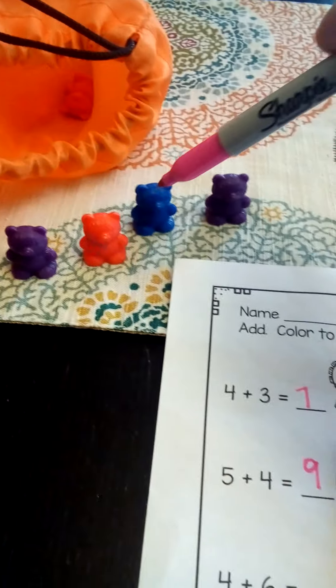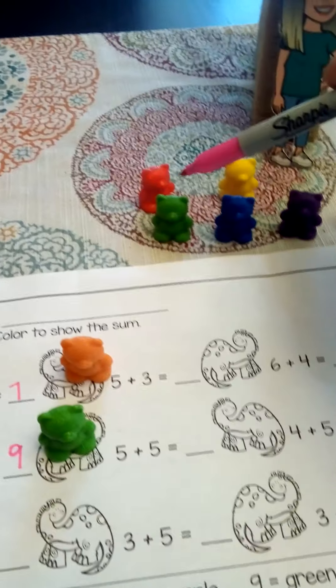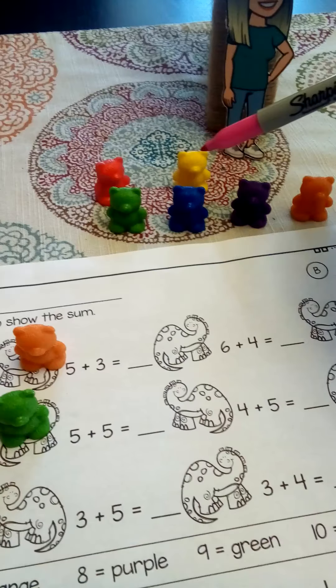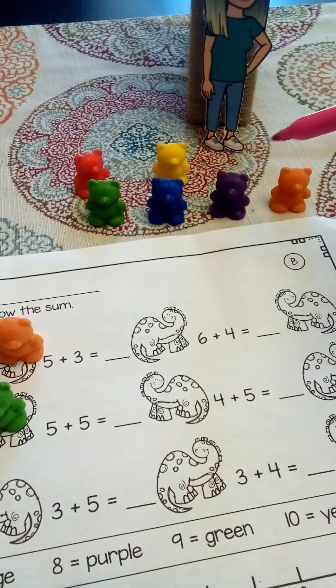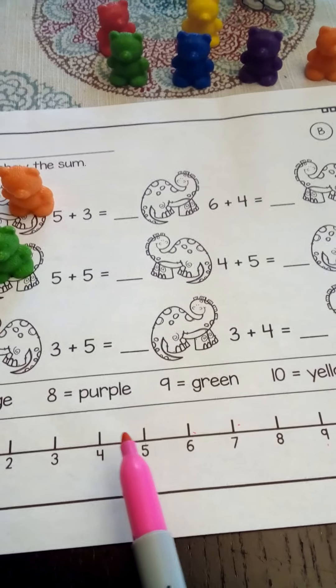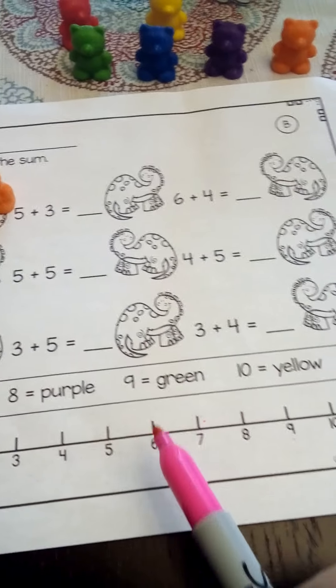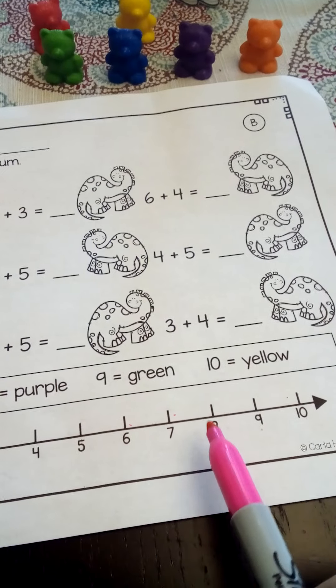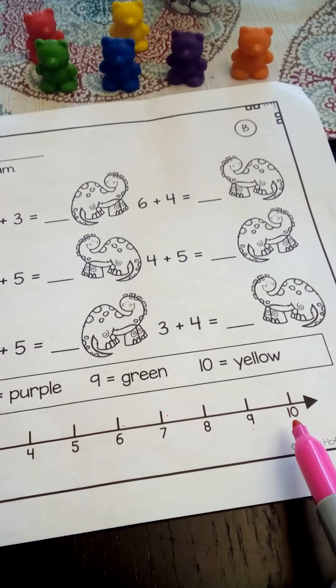One, two, three, four, five, six, seven, eight, nine, ten bears. Okay. Let's see. We've got to start at four and take six jumps. One, two, three, four, five, six. Did we get a ten? We sure did.